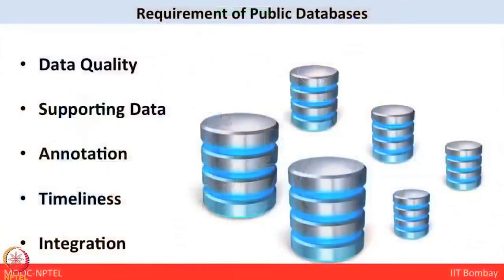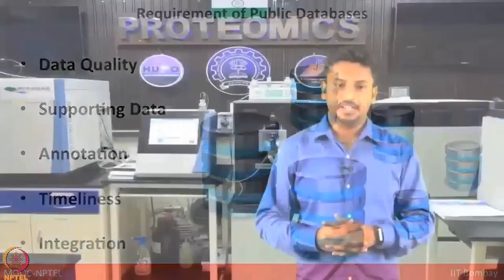What are the principal requirements of a public database? First, data quality — the data should be curated and of high quality. Next, supporting data — users will need to examine primary experimental data either in the database itself or by cross-reference back to the laboratory database. Third, deep annotation — ancillary information should be attached to each data object. Fourth, timeliness — data should be available on an internet-accessible server within days of publication. Finally, integration — each data object should be cross-referred to related biological entities in other databases.